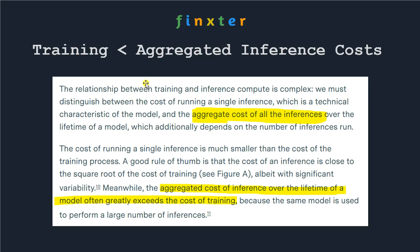But there is a very important and complex relationship between training and inference. We cannot really look at a single inference operation. We don't train a model for a single inference operation — we train a model because we want to run many inference operations. In order to make good decisions, we need to look at the aggregate costs of all inference over the lifetime of a model.